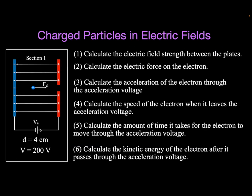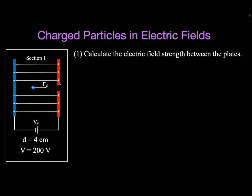Now for each section — one, two, and three — we're going to go through all of the calculations. Here in section one, we have the acceleration voltage. The distance between the plates is four centimeters. The voltage difference between the two plates is 200 volts. The particle flies through there because of that electric force. We're going to calculate the field strength between the plates, the force on the electron, the acceleration of the electron, the speed when it leaves the acceleration voltage, the time it takes to go through, and the kinetic energy when it passes through that gap. Let's get started with number one — calculate the electric field strength between the plates.